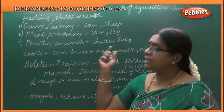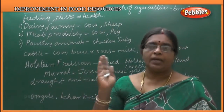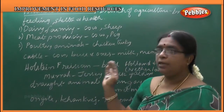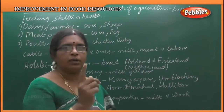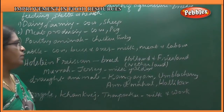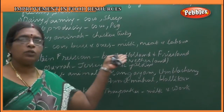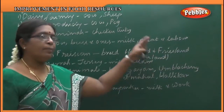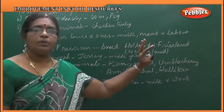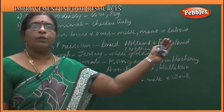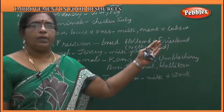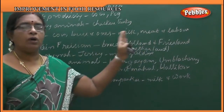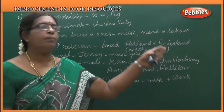What is meant by cattle? Cattle is cow, bull, and ox. Cow, bull, and ox together form cattle. They are used for milk, meat, and labor. So cow, bull, and ox together are called cattle.